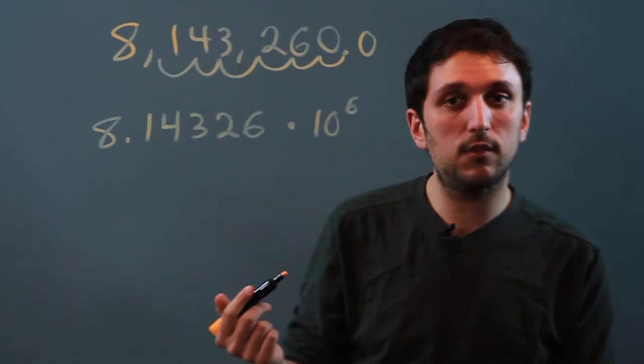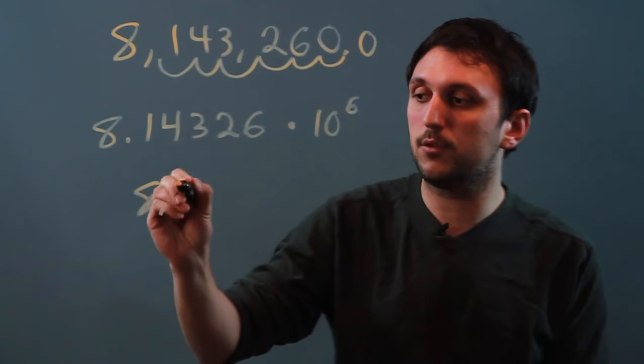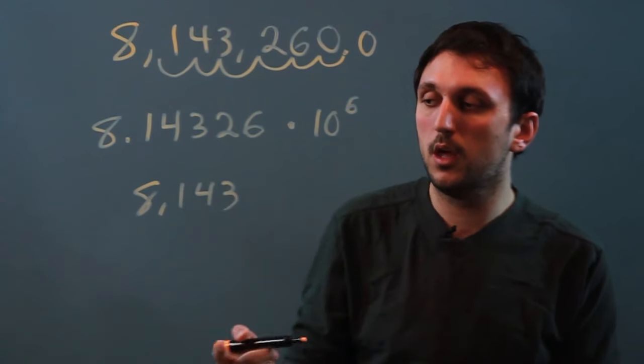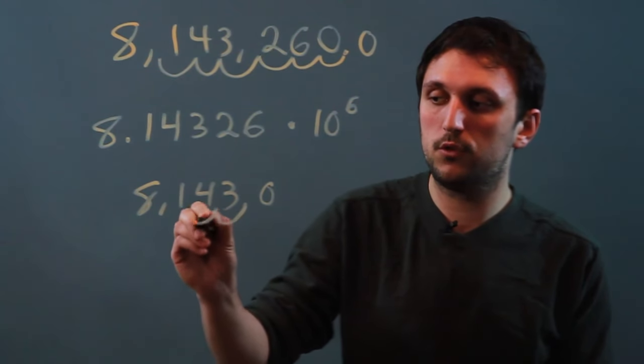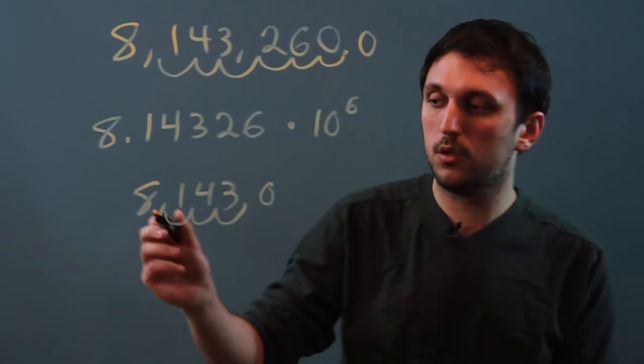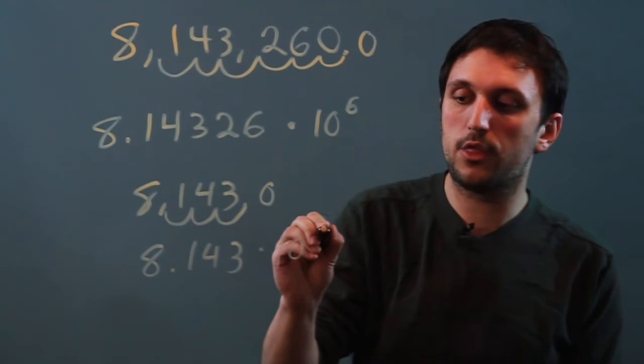We could take an easier number just to see how it's different. Let's say we just had the number 8,143. To put this number in standard form, we would need to move it over 1, 2, 3 places. So it's 8.143 times 10 to the third.